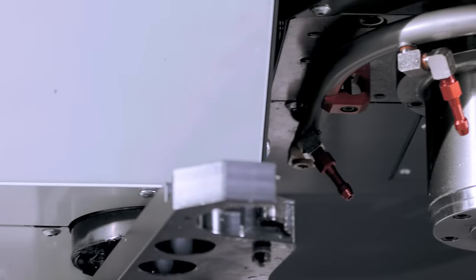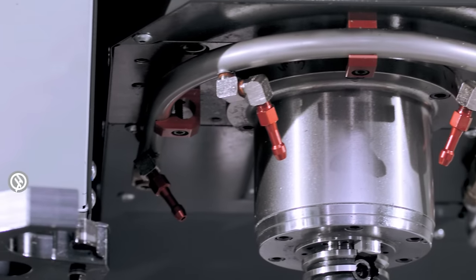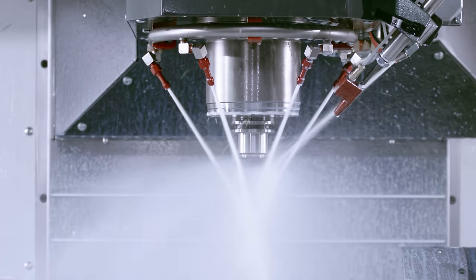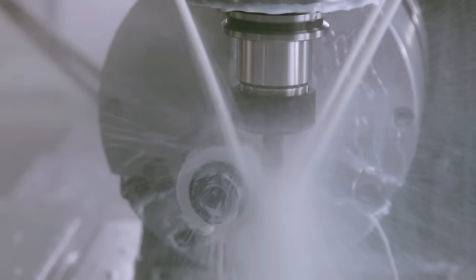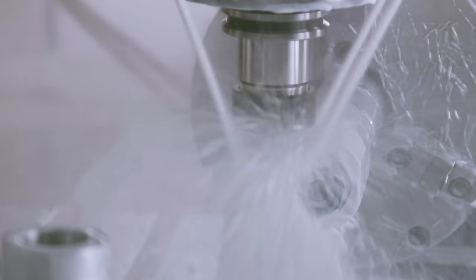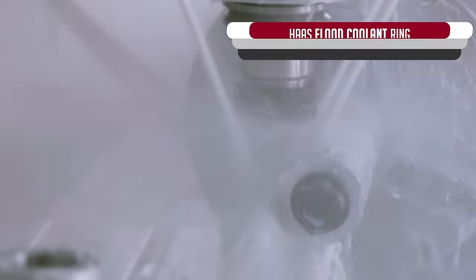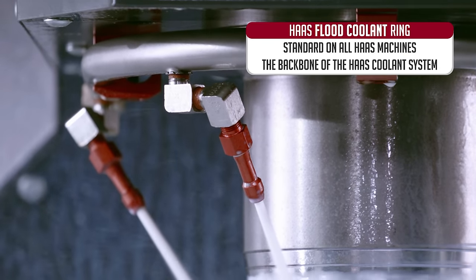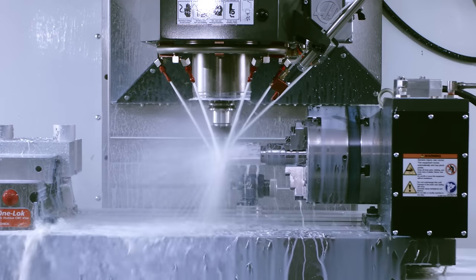We'll start with perhaps the most common method. The Haas flood coolant ring provides a cascade of coolant that thoroughly lubricates the cutting area while carrying away the chips produced in the cut. The coolant ring is standard on all VF and VM series mills and serves as the backbone of our coolant delivery systems.